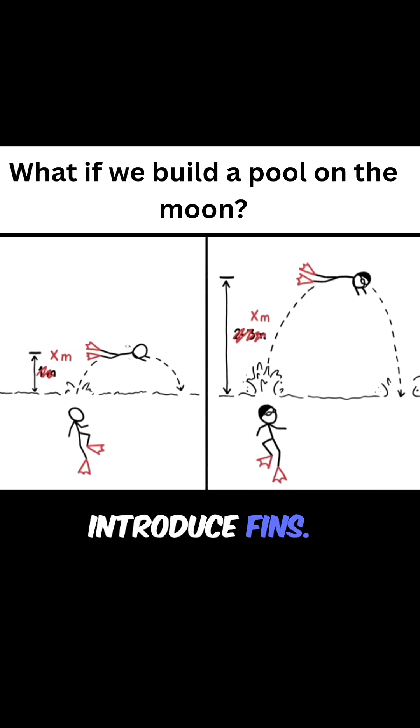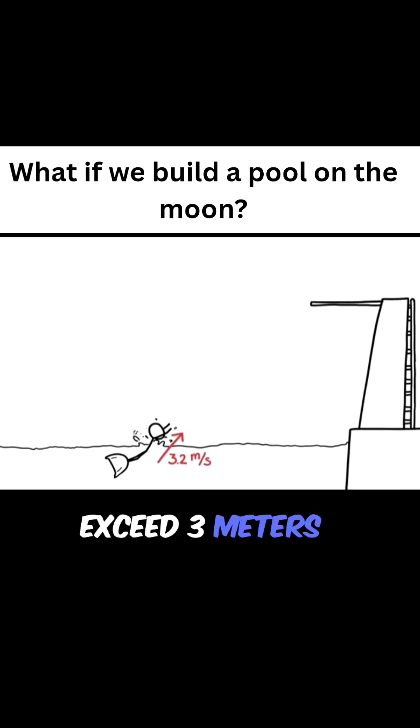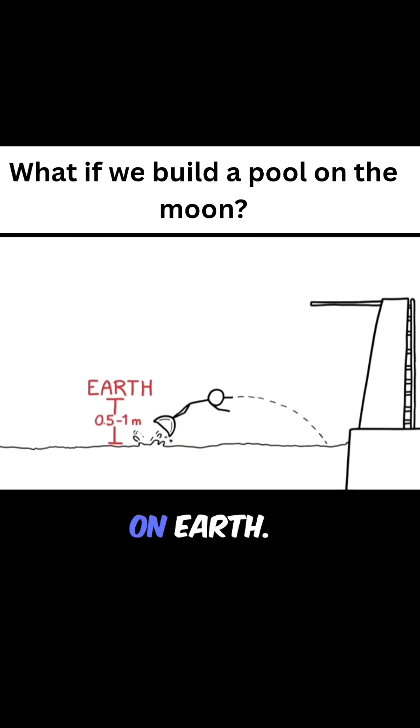The numbers get even more exciting when we introduce fins. Swimmers wearing monofins can exceed 3 meters per second, which is fast enough for some pretty impressive jumps even on Earth.